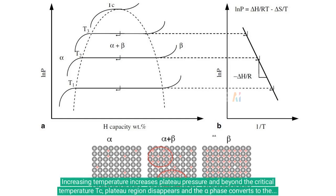Increasing temperature increases plateau pressure and beyond the critical temperature TC, the plateau region disappears and the alpha phase converts to the beta phase continuously.